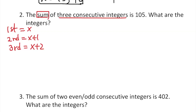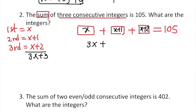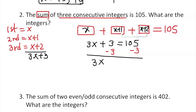You're going to add them because this is a sum. Some students can put down 3x plus 3 directly, but let me show it step by step. x plus (x plus one) plus (x plus two) equals 105. Combining, you get 3x plus 3 equal to 105. Then subtract 3 from both sides, giving 3x equals 102.